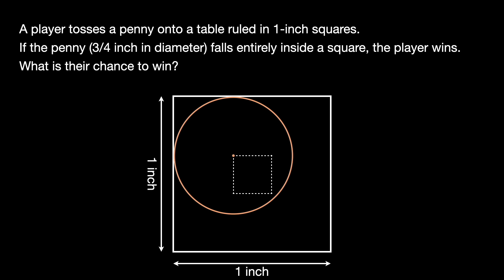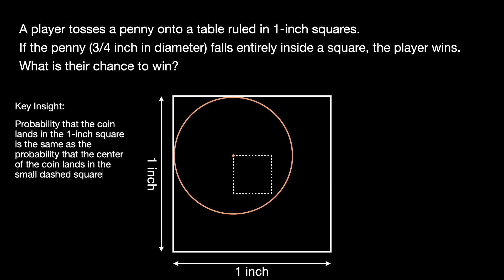This is our first key insight. We realize that the probability that the coin lands completely within the 1 inch square is the same as the probability that the center of the coin lands in the small dashed square. If I move the coin in any of the directions further out such that the center of the coin was not within that dashed square, the edges of the coin would breach the edges of the square and therefore we would lose the game.